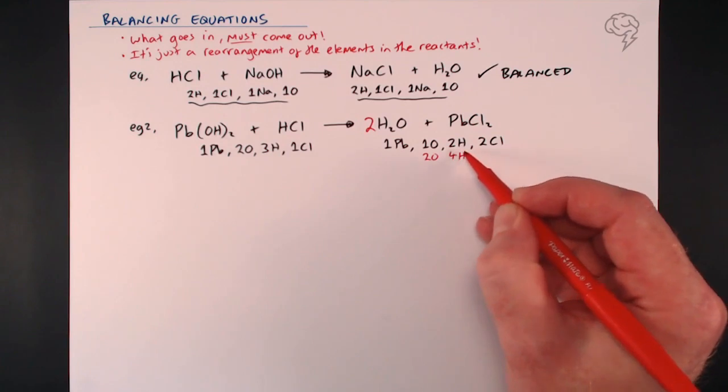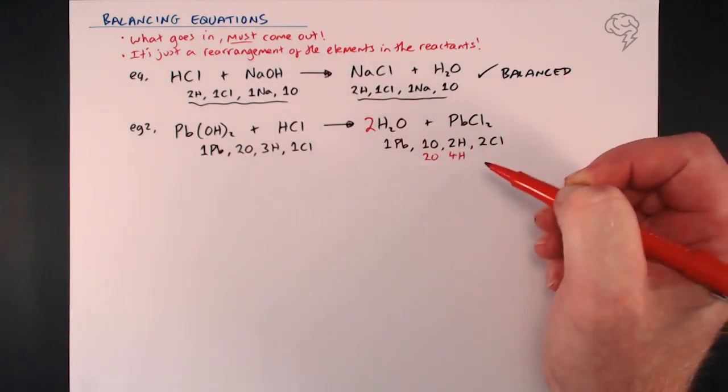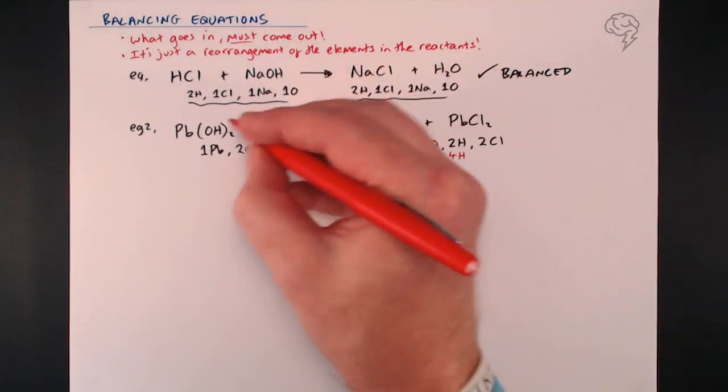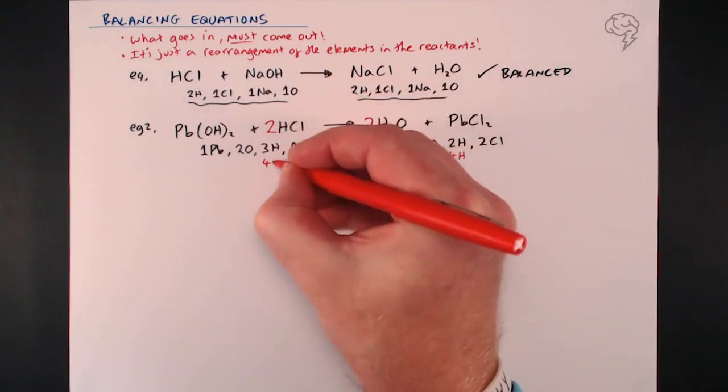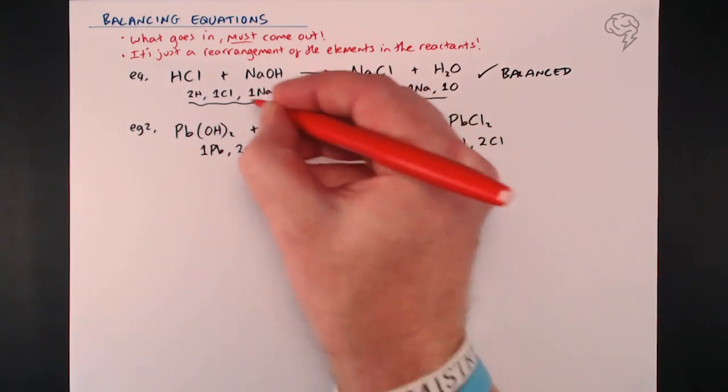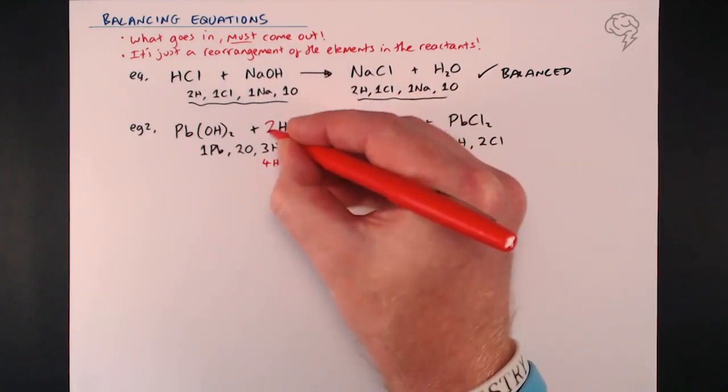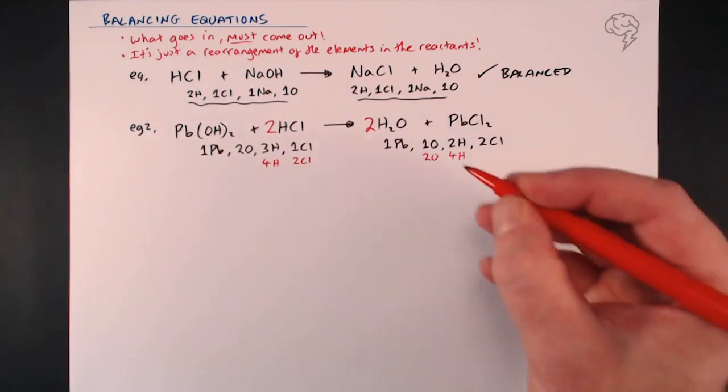Now we've fixed the oxygen there, but actually we've still got an issue with hydrogen - we've got four hydrogen on this side and only three here. Well, that's easily fixed. All I have to do is put a big two here, and now we've got one, two hydrogen there and two hydrogen there, so that's four in total over this side.